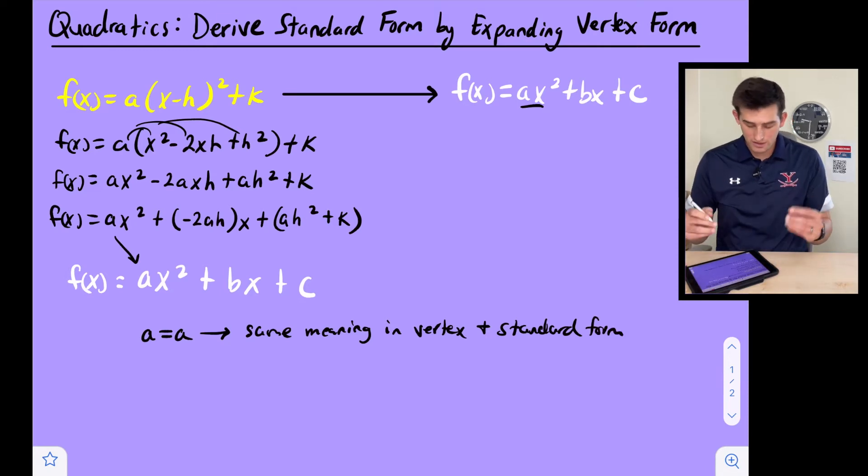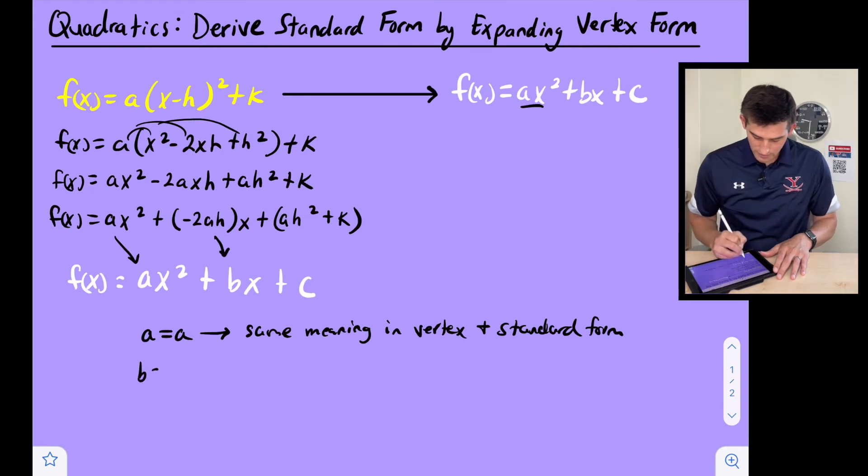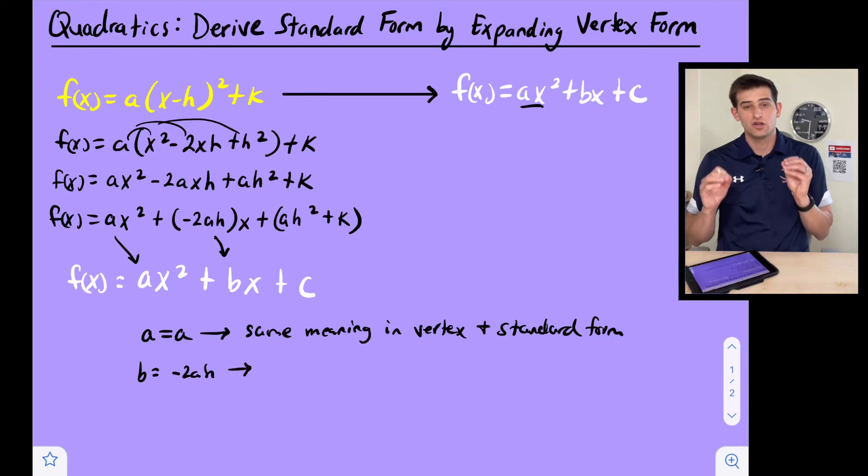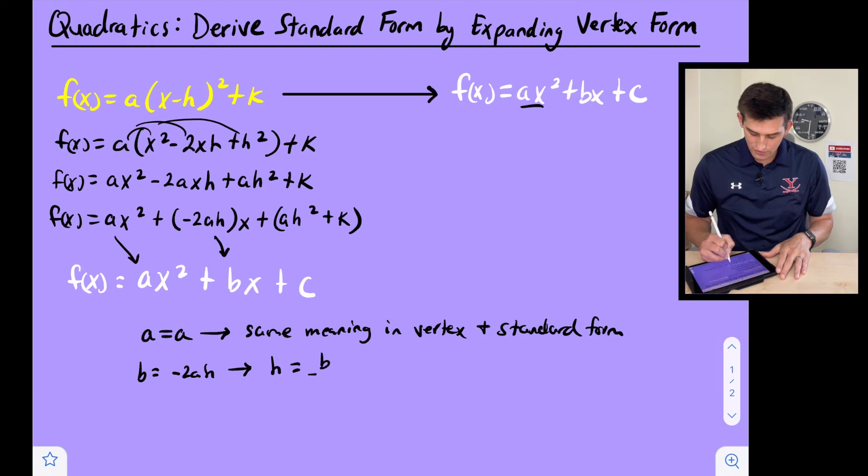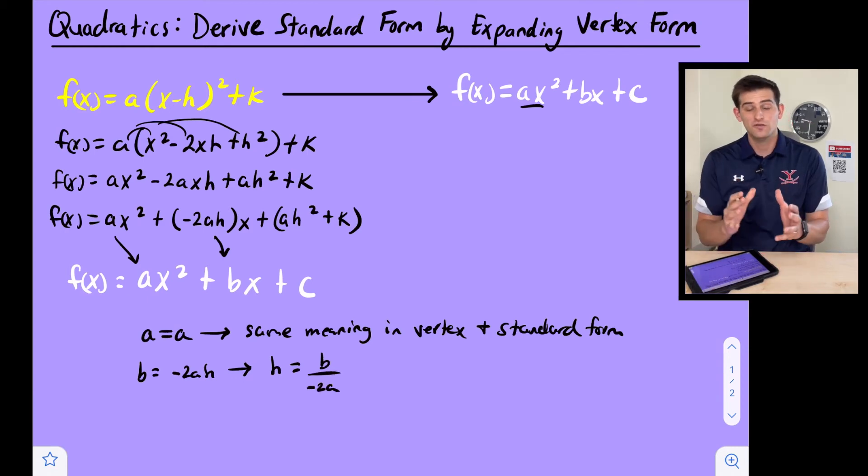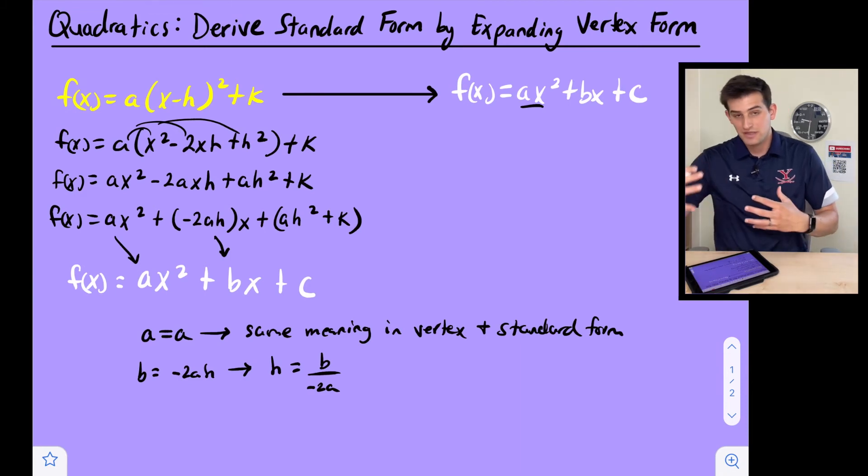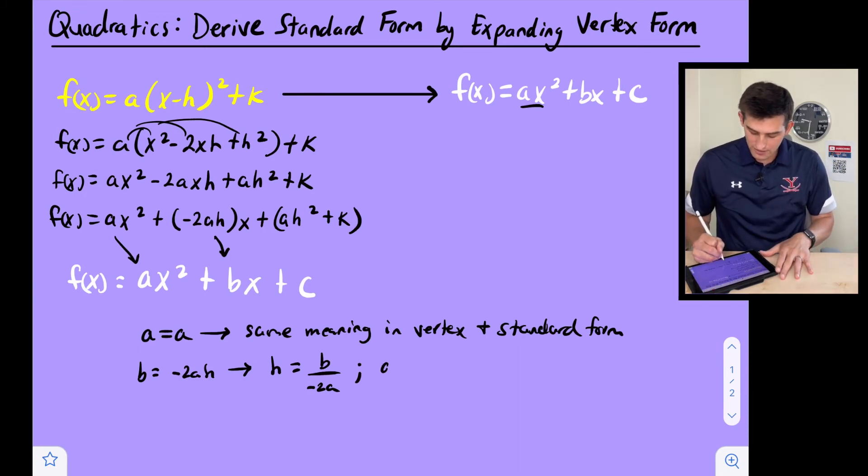Now for b, what is b representing here? Well here b is equal to -2ah. So now if we solve this for h we're going to get something that is very familiar to us. If we solve this for h we would be dividing both sides by -2a, so this is going to be h = b/(-2a). Now hopefully that rings a bell for how do we find the axis of symmetry. It is x equals opposite of b over 2a, or -b/(2a).